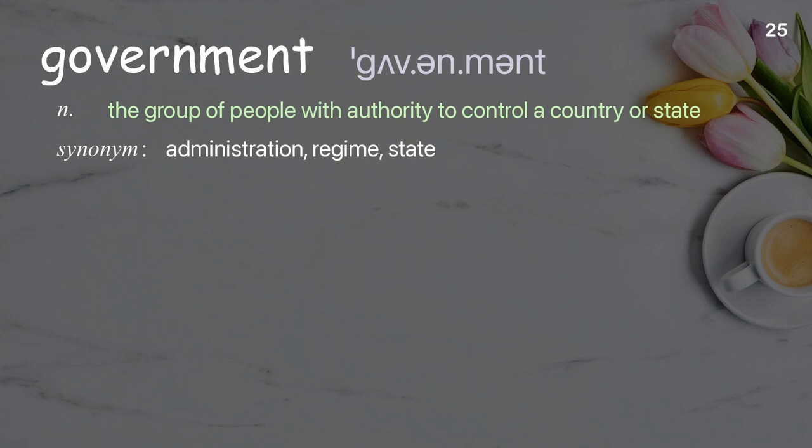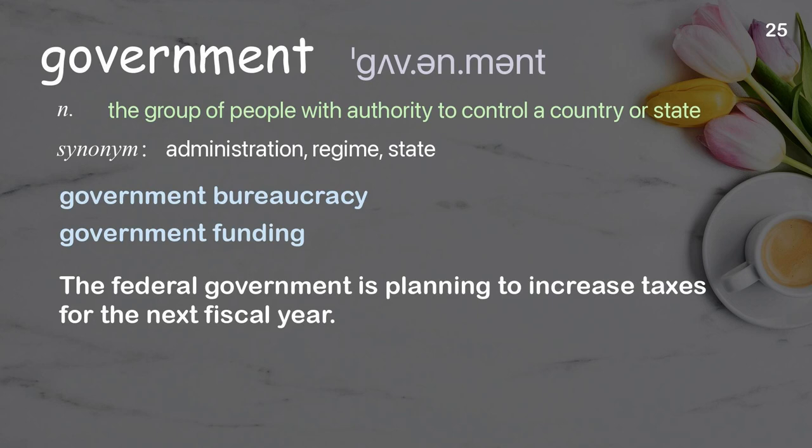Government: The group of people with authority to control a country or state. Examples: government bureaucracy, government funding. The federal government is planning to increase taxes for the next fiscal year.